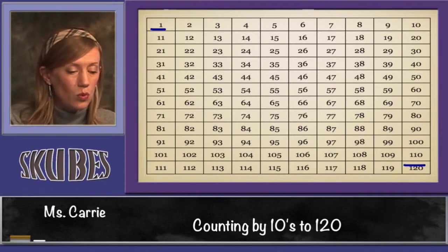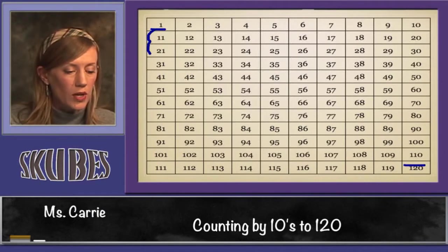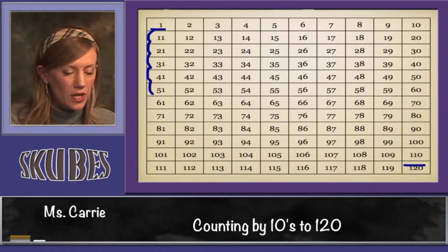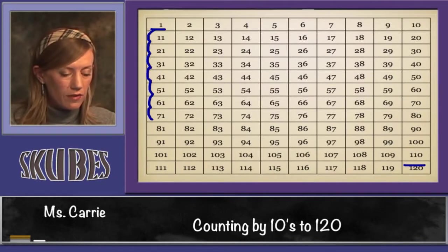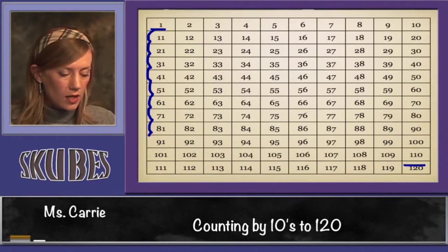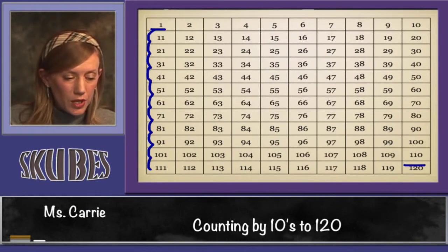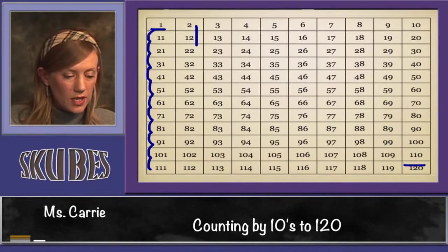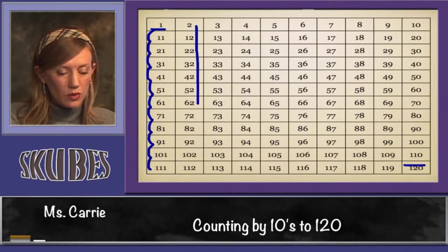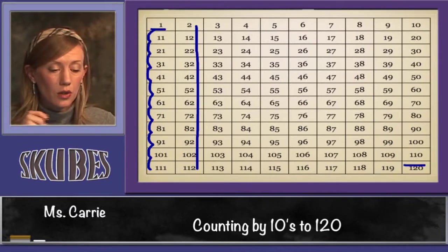We see that all of the digits end in 1. We start with 1, then we go to 11, 21, 31, 41, 51, 61, 71, 81, 91, 101, 111. If you start with the number 2 and you look down the column, you see that all of those numbers' digits end in a 2.